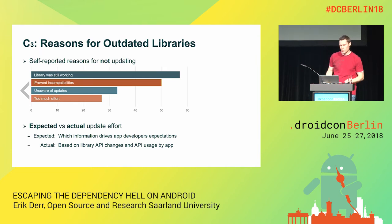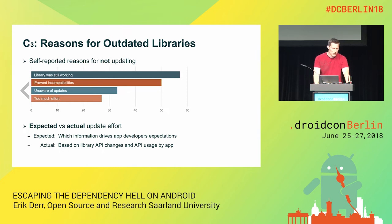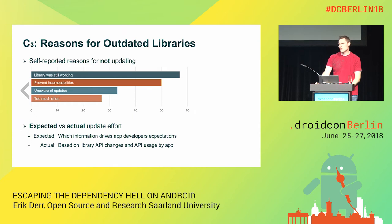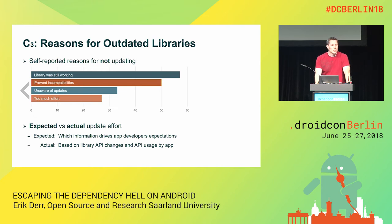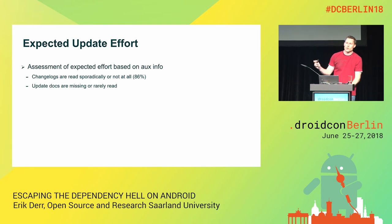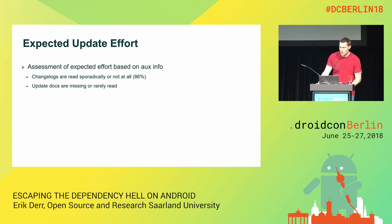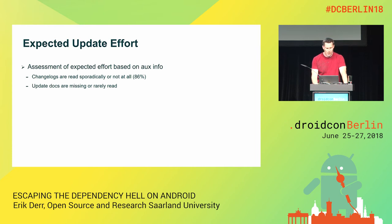This boils down to expected versus actual update effort. The expected update effort is which information drives app developers to assess compatibility of a new library version. The actual update effort involves doing code analysis and checking how the API evolves over time. When we asked what information developers use to assess compatibility, 86% said they never or rarely read changelogs. It was even worse for update documentation — either it's missing entirely or they read it even less frequently.